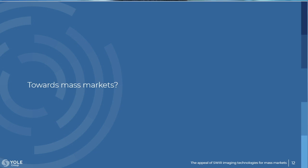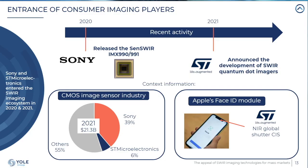Now let's analyze the signs pointing toward SWIR's appeal for the mass market. Between 2020 and 2021, two key events signaled interest from the consumer imaging field: the entrance of Sony and STMicroelectronics. Sony is the current leader of the CMOS image sensor industry with almost 40% market share. STMicroelectronics is also a major name in consumer imaging with around 6% market share — for instance, it supplies the global shutter CMOS sensor integrated in Apple's Face ID modules.